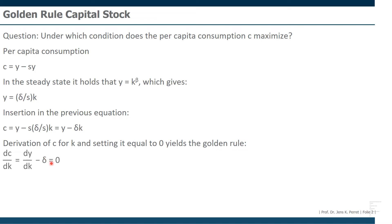If I set this equal to zero, I have this part of the equation, and I can simply bring the delta to the right side, giving me this golden rule condition.